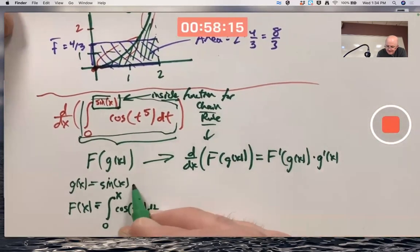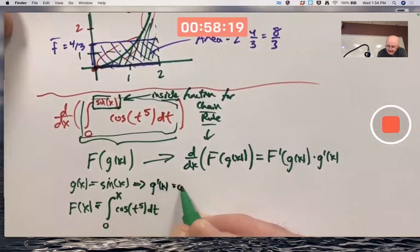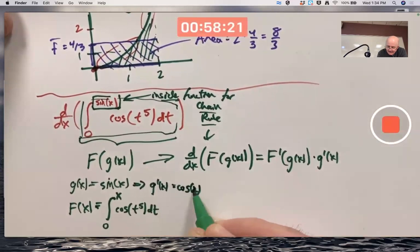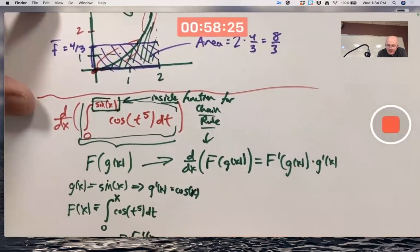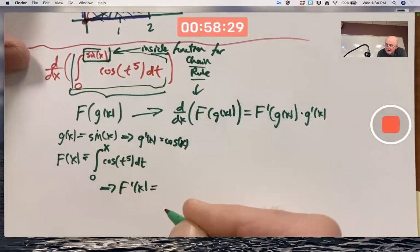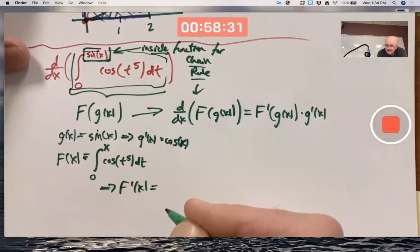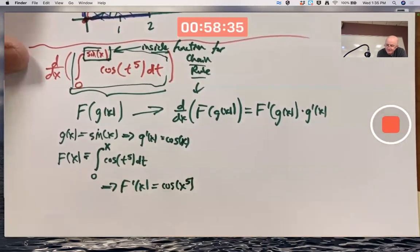g prime is easy to figure out. That's cosine of x. And actually, capital F prime is easy to figure out because of the second fundamental theorem of calculus. What is it? Cosine of x to the fifth. That's it. Right?